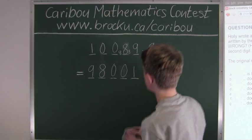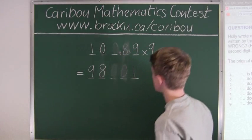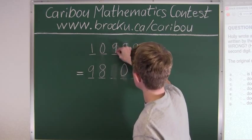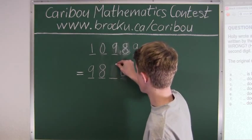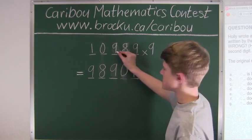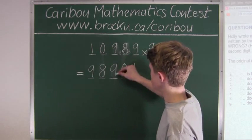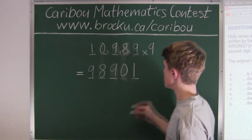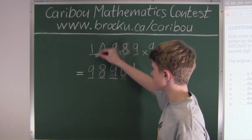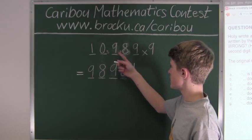Let's verify: the 9 must also appear in the reversed number. 9 times 9 is 81, plus the carryover of 8 is 89 — so we put 9, which matches. Then a carryover of 8. Then 9 times 0 is 0, plus carryover of 8 is 8 — which works. Then 9 times 1 is 9. Everything checks out. The original number is 10,989.